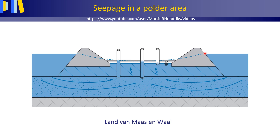Note that the hydraulic head in the aquifer is everywhere larger than the level of the water table in the polder. This causes groundwater to seep through the semi-permeable layer. Seepage is largest just behind the dikes, where the difference in hydraulic head between the aquifer and the polder's water table is largest, and it diminishes towards the center of the polder, where the difference in hydraulic head is smaller.